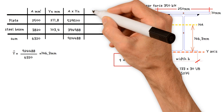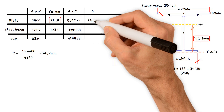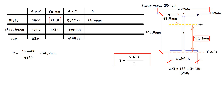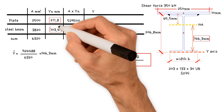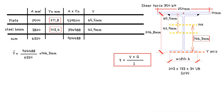In the next column, we need to find Y, the distance from the neutral axis to the centroid of each member's cross-sectional area. For the plate, Y equals Yn 211.8 mm minus Y-bar 146.3 mm, which gives a value of 65.5 mm. For the steel beam, Y equals Y-bar 146.3 mm minus Yn 103.4 mm, which gives a value of 42.9 mm.